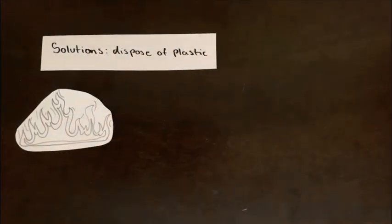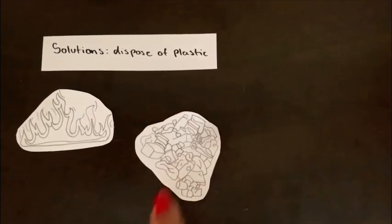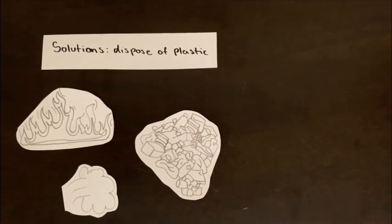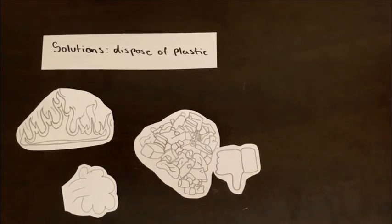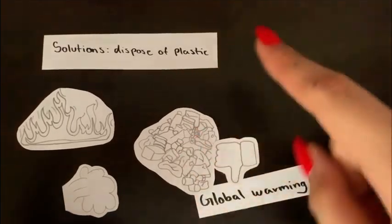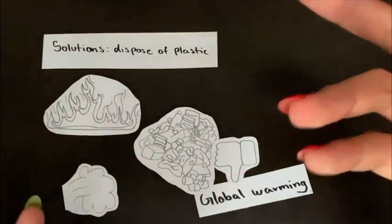The first kind is incineration. This may seem like a suitable idea to mass decompose significant amounts of plastics. However, the fumes created when you burn plastic is intoxicating to human health and contributes to the persisting problem of global warming, which is why the best solution for this method would be to trap the fumes in a container and bury those containers.